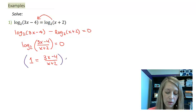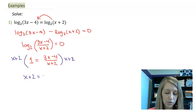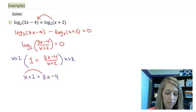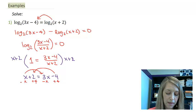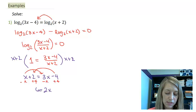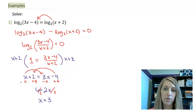Do my magic trick to get rid of my fraction by multiplying both sides times x plus 2. And that gives me x plus 2 is equal to 3x minus 4. Do this by moving my x to the same side and my constants to the opposite side. And that gives me 2x is equal to 6.